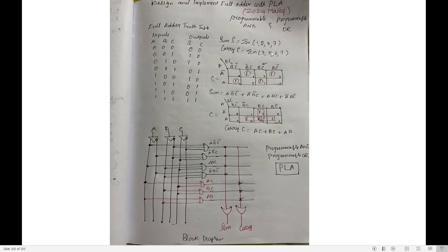Now go for the carry term. Carry minterms are 3, 5, 6, 7. Place ones at positions 3, 5, 6, and 7. Start grouping: these two are neighbors — first group. These two are neighbors — second group. Top and bottom are wrap-around neighbors — third group. For the first group, what is common? A and C, giving term A·C. For the second group, common is A and B, giving A·B. For the third group, common is B·C. So carry = A·C + A·B + B·C.